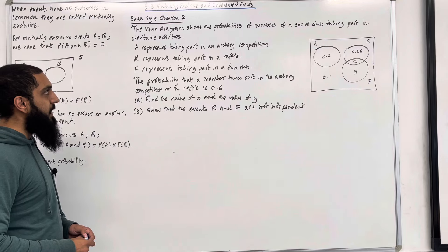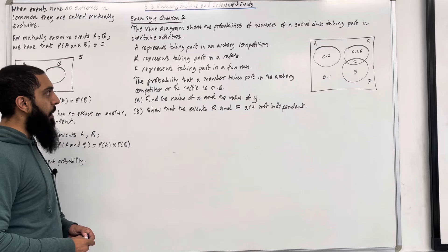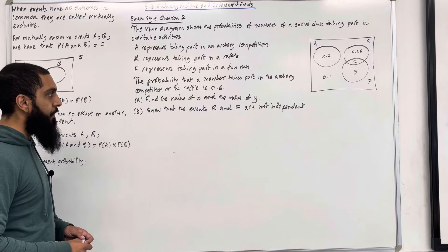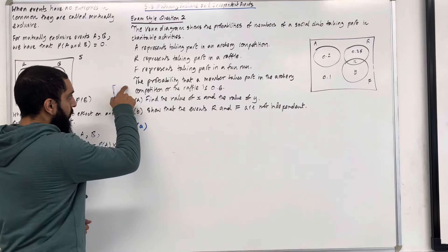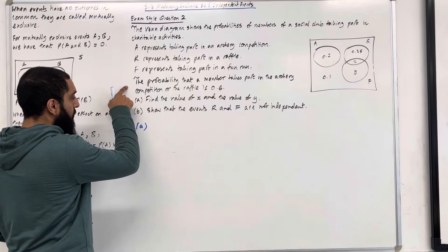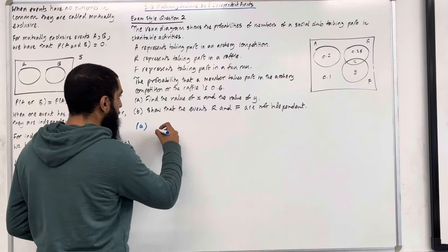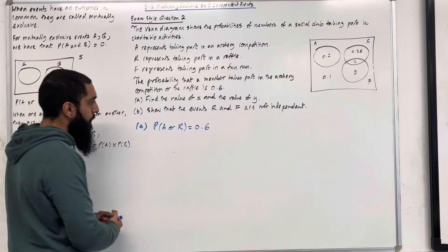Moving on to exam style question 2. The Venn diagram shows the probabilities of members of a social club taking part in charitable activities. A represents taking part in an archery competition, R represents taking part in a raffle, and F represents taking part in a fun run. The probability that a member takes part in the archery competition or the raffle is 0.6. Part A: find the value of X and the value of Y. So, the probability of A or R is equal to 0.6.